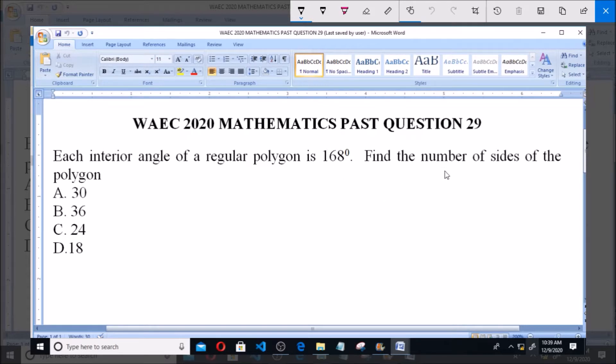We are asked to find the number of sides of the polygon. The sum of interior angles of a polygon is equal to (n - 2) multiplied by 180.